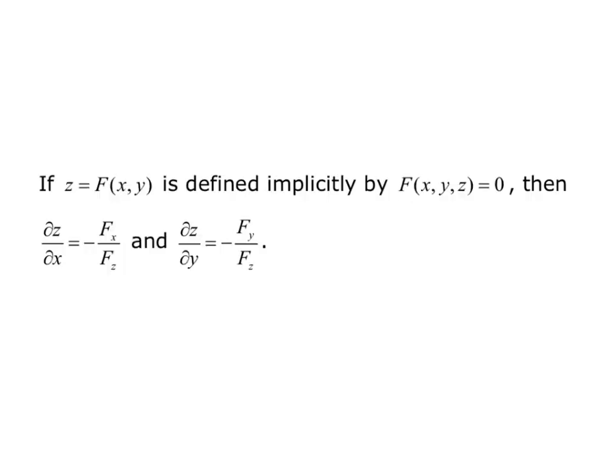If z equals f of x, y is defined implicitly by F of x, y, z equals zero, then the partial derivative of z with respect to x equals negative F sub x over F sub z, and the partial derivative of z with respect to y equals negative F sub y over F sub z.